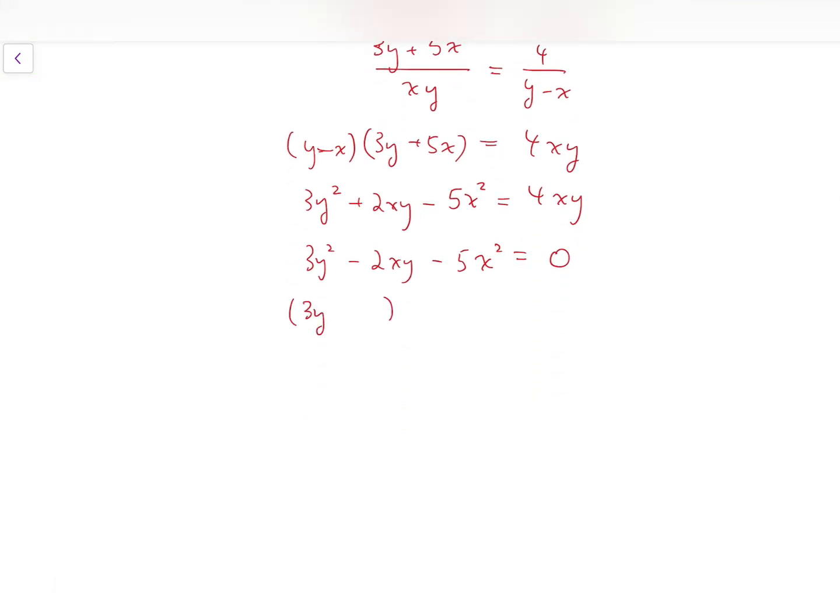Then I'm going to factorize. And we have 3y minus 5x times y plus x equals 0. So that means 3y minus 5x equals 0, or y plus x equals 0.